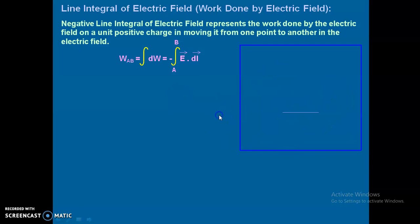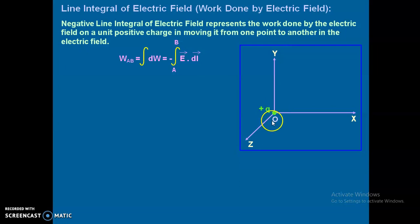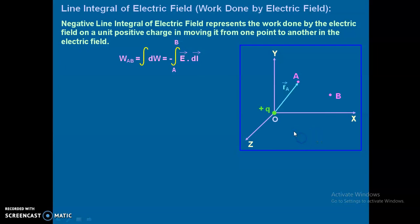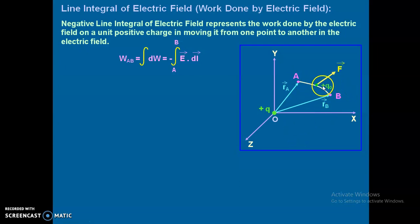Let's understand with a diagram. Consider the Cartesian planes x, y, and z. A positive charge plus q is kept at the origin O, and the charge has to be moved from point A to point B. The position vectors of points A and B are vector r_A and vector r_B.